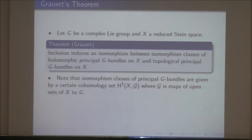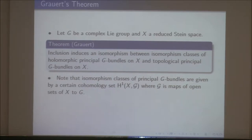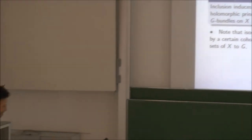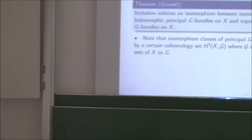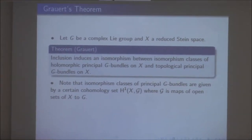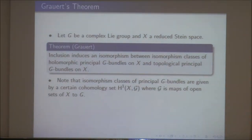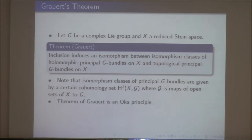Why is this an Oka principle? Isomorphism classes of principal G-bundles are given by H^1(X, G), where G is the sheaf of groups — maps of open subsets of X into the group. If you take holomorphic maps, H^1 gives you holomorphic principal G-bundles; if you take continuous maps, H^1 gives you topological principal G-bundles. So the question of whether a topological bundle has a holomorphic structure is a problem about comparing two cohomology sets — an example of an Oka principle.